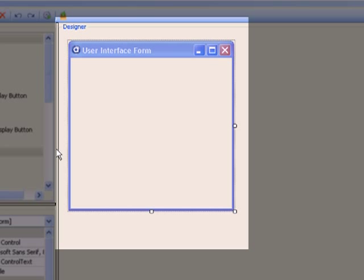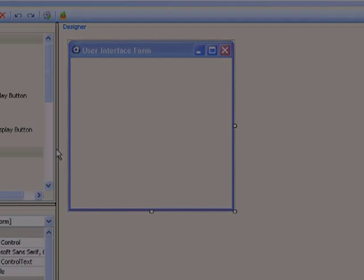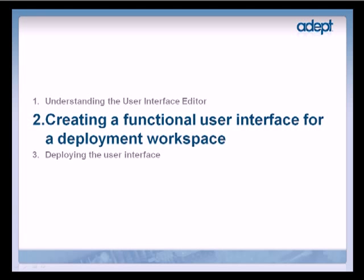We can also manipulate the behavior of the control and set limits for data values using the property editor. The user interface form designer helps in managing the layout of the user interface. To create a custom user interface, we will drag and drop controls into the designer where they can be aligned and resized. By the end of this section, we will have a functional user interface that is ready for deployment.